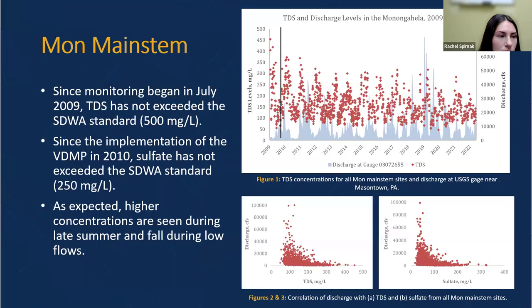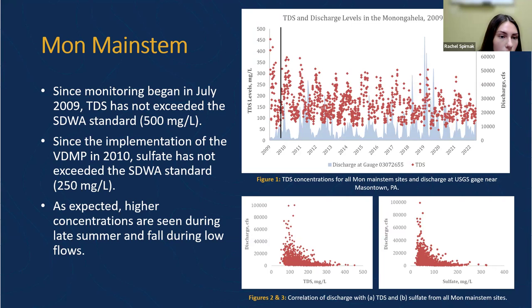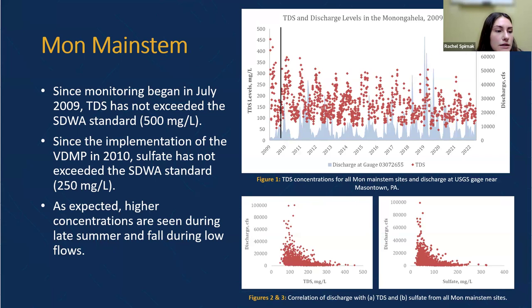In the main stem, from the time we started monitoring, TDS hasn't exceeded the standard of 500. This figure shows all main stem sites in the Mon as well as flow at one of those sites. The black line shows the implementation of the VDMP, where you can see a visible shift. Since implementation of the VDMP, sulfate hasn't exceeded its standard of 250 milligrams per liter — there were a few exceedances at the beginning of monitoring, but none after the VDMP went into place. These figures really show the strong relationship between discharge and each of these parameters, so it's highly dependent on flow.